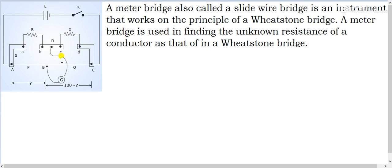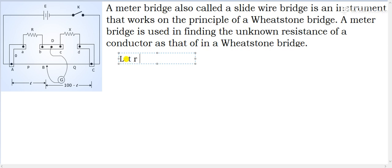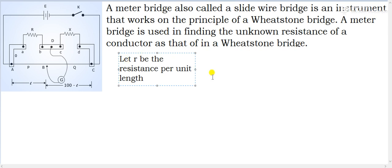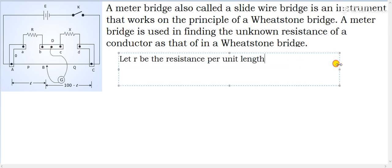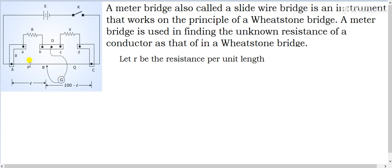To derive the expression for finding unknown resistance using the meter bridge, let small r be the resistance per unit length of the wire. This is the key assumption for the derivation.